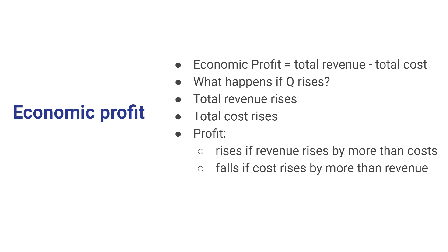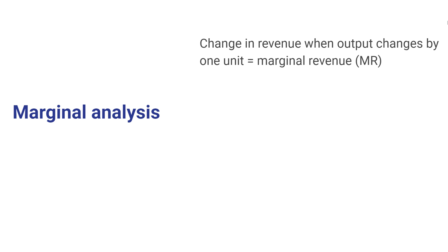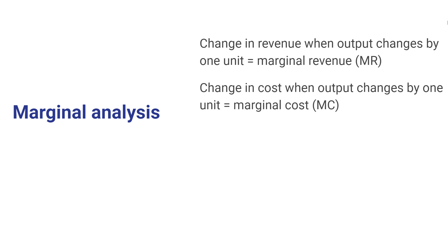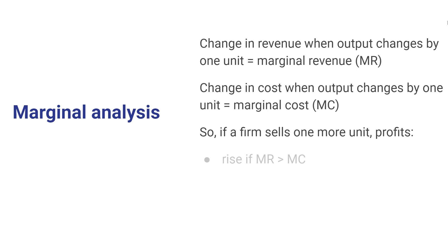Now let's talk about these concepts in more detail using marginal analysis. The changes in revenue and cost determine whether producing more or less will be profitable. We define marginal revenue as the change in total revenue when you produce one more unit, and marginal cost as the change in cost when output changes by one unit. A firm's profits will go up if marginal revenue exceeds marginal cost, and profits will fall if marginal revenue is less than marginal cost.